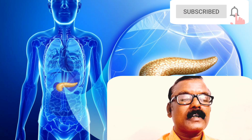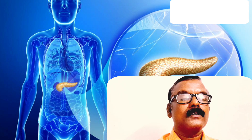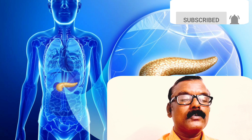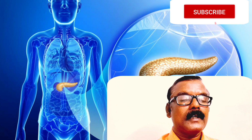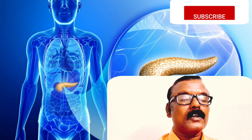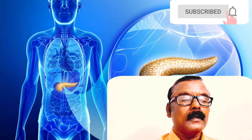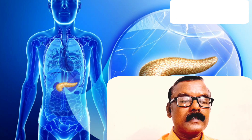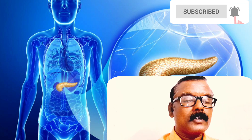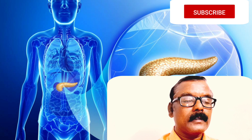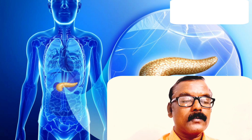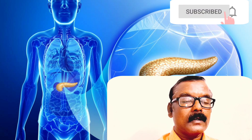A healthy pancreas produces the chemicals needed to digest the food we eat. The exocrine tissue secretes a clear, watery, alkaline juice that contains several enzymes. These break down food into small molecules that can be absorbed. The enzymes include trypsin and chymotrypsin to digest protein, amylase to break down carbohydrates, and lipase to break down fats, fatty acids, and cholesterol.